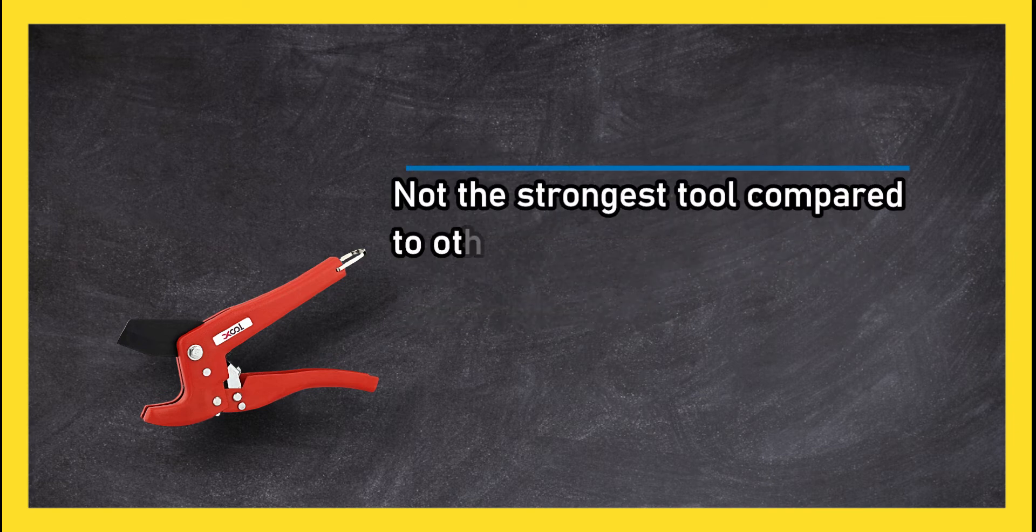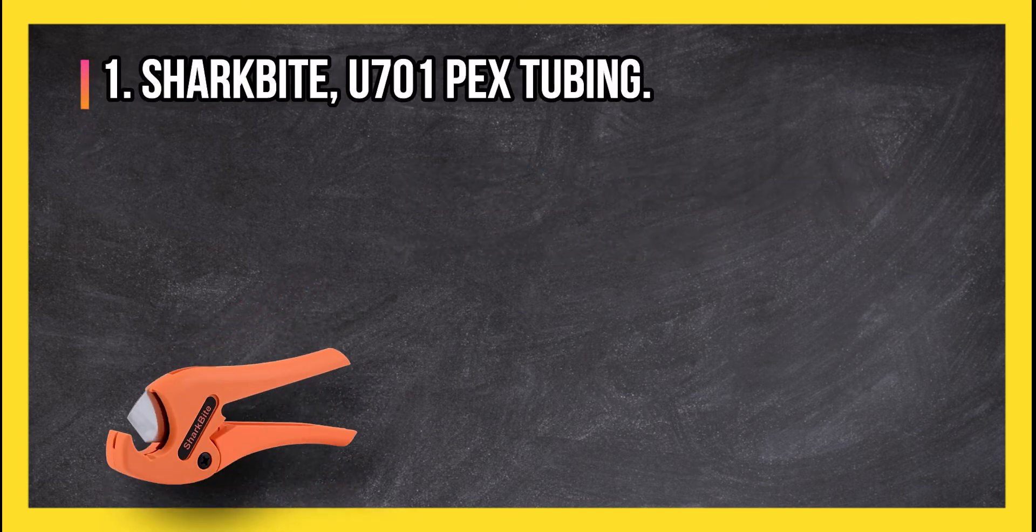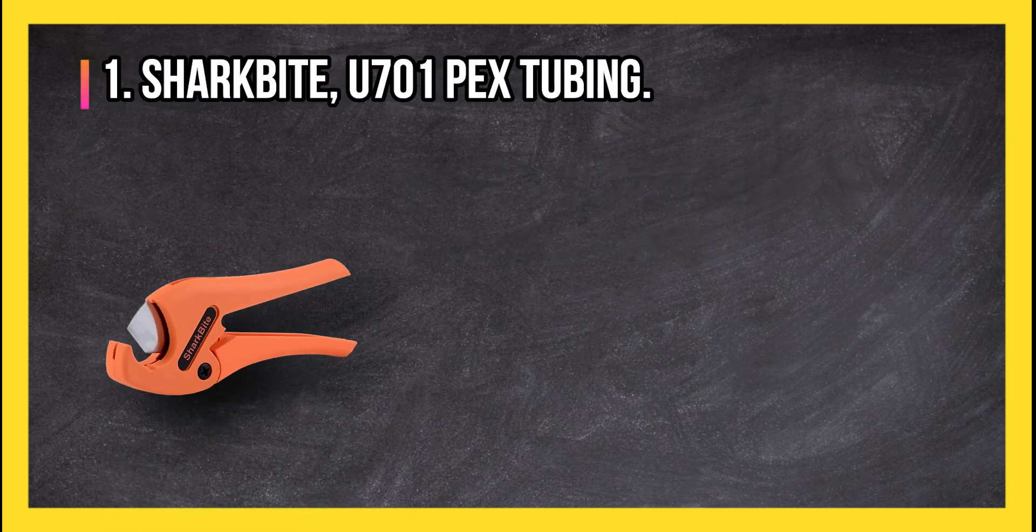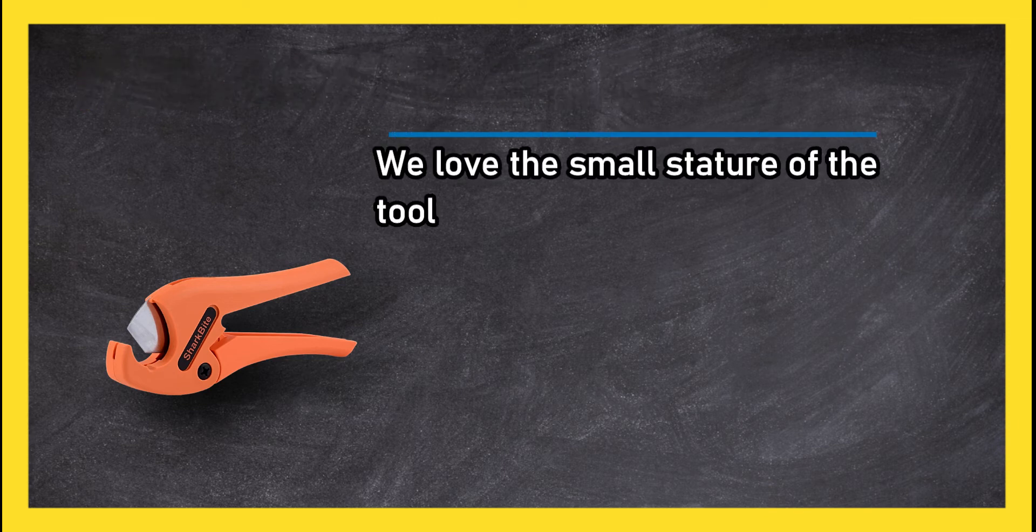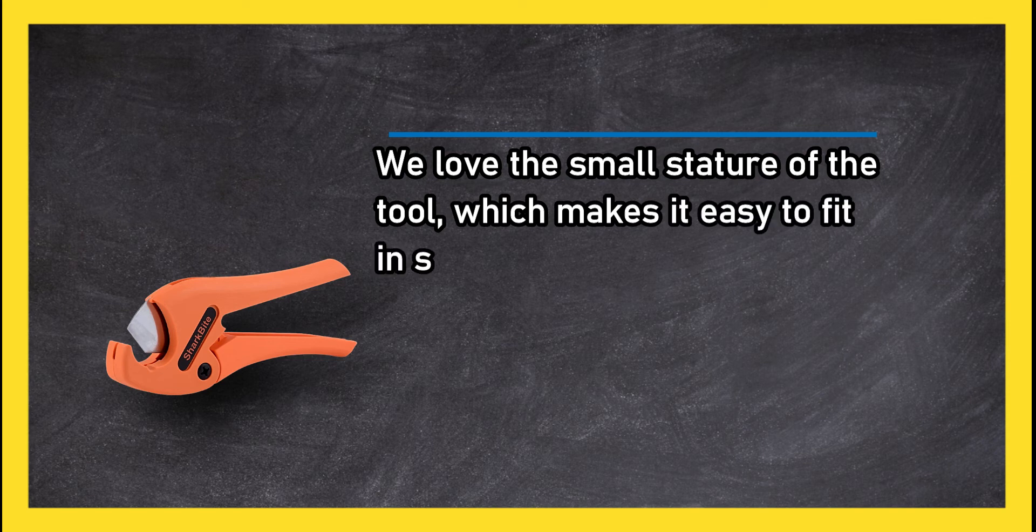At number one, SharkBite U701 PEX tubing cutter. We love the small stature of the tool which makes it easy to fit in small spaces if necessary. Great to keep around in a pocket while on the job.